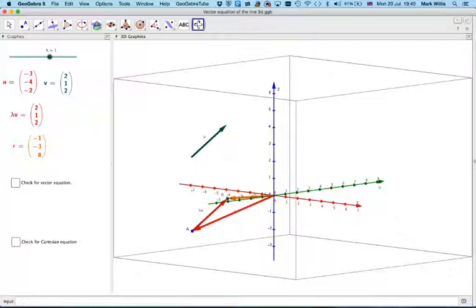What you need is to know one particular point on the line. In my example, this is the point here, which is the vector OA.